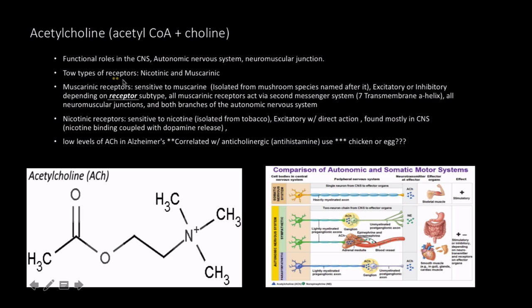There are two types of receptors for acetylcholine, and these two types have different structural features and therefore different functional roles. There are nicotinic and muscarinic receptors. The muscarinic receptors are very sensitive to muscarine, a compound isolated from a mushroom species that it is actually named after. Muscarinic receptors can be either excitatory or inhibitory, depending on the receptor subtype.